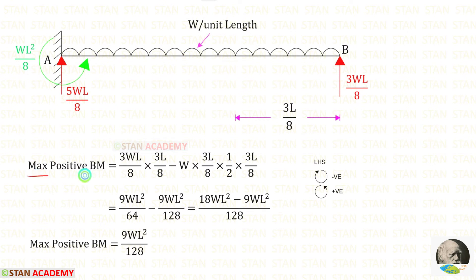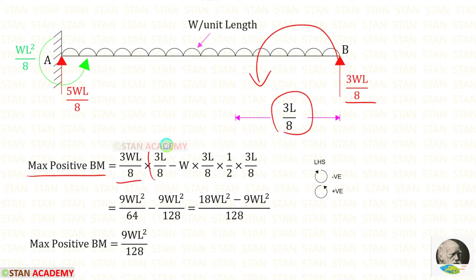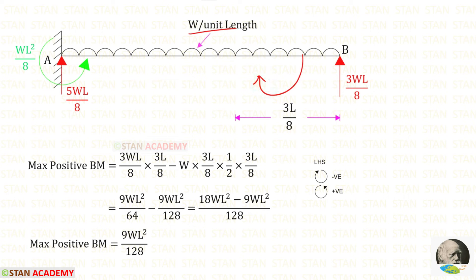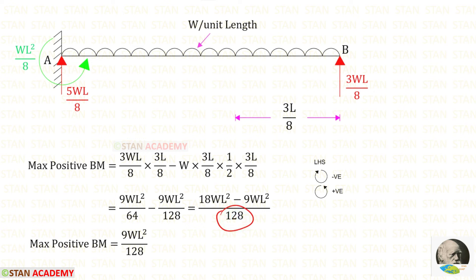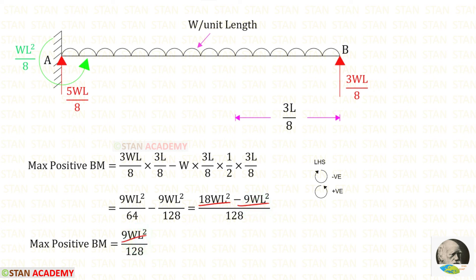Now let us find the maximum positive bending moment. RA acts anticlockwise, so it is positive with distance 3L/8. The UDL acts clockwise, so it is negative; multiplying by distance and distance/2 gives WX²/2. Computing: 8 × 8 = 64 and 8 × 2 × 8 = 128. Taking LCM as 128 and multiplying the first term by 2: 18WL² minus 9WL² gives 9WL². So the maximum positive bending moment is 9WL² upon 128, occurring at 3L/8 from point B.